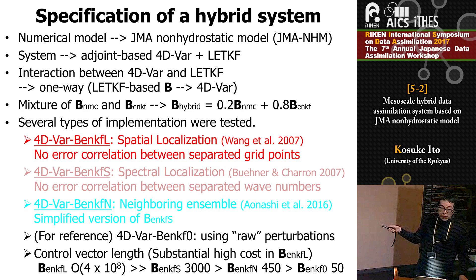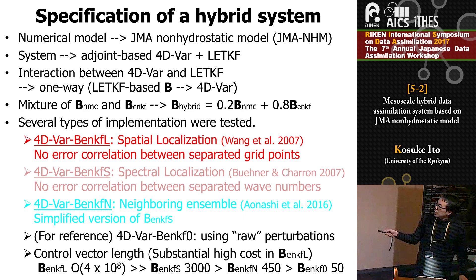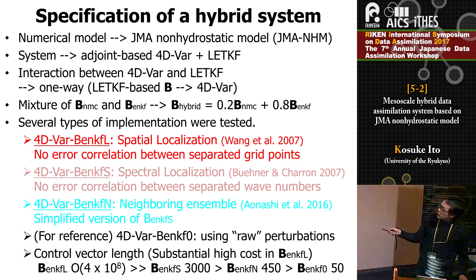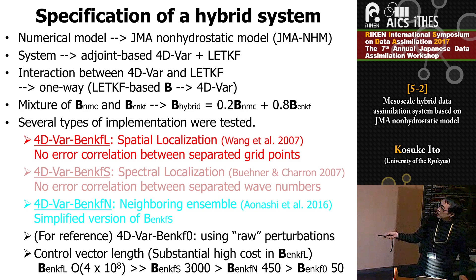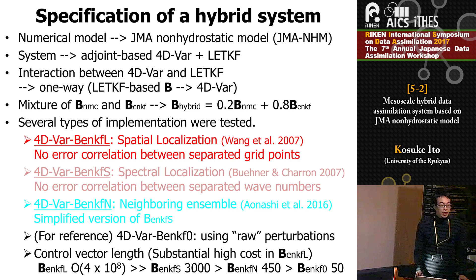4DVar BNMC-L uses spatial localization, the most common approach, with no error correlations between separated grid points. 4DVar BNMC-S uses spectral localization, assuming no error correlations between separated wavenumbers rather than separated grid points. The third is the neighboring ensemble approach, a simplified version of BNMC-S. For reference, 4DVar BNMC-0 uses flow perturbations from the ENKF system. The reason we tested several kinds of systems is numerical cost. BNMC-L has a very long control vector, while spectral localization and the neighboring ensemble approach have almost negligible additional control vectors.